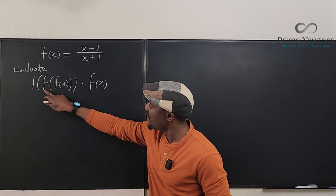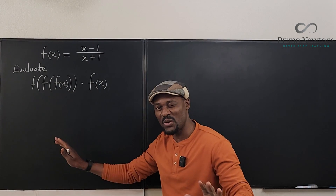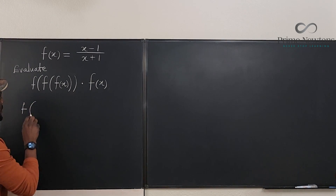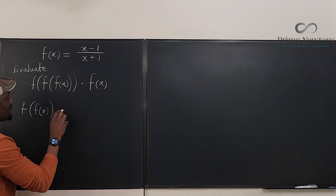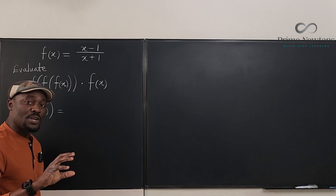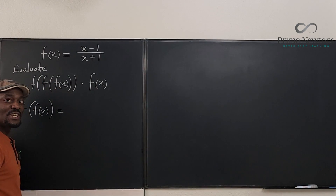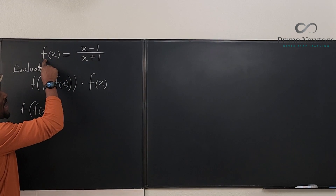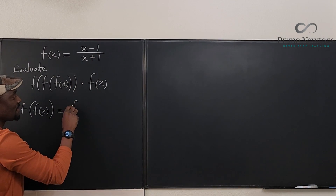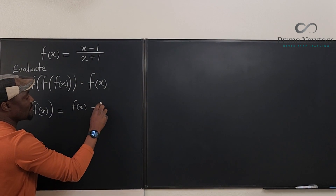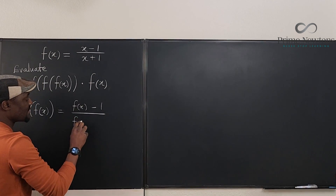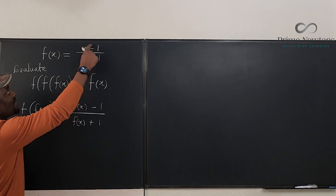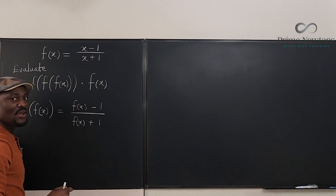The innermost function is f composed with f of x. f composed with f of x simply means that what you're going to be given now is f of f(x). Remember that whatever you give to f, it will apply the same rule. So this is going to be f of (x minus one over x plus one), meaning the argument becomes (x−1)/(x+1). But what exactly is f of x? f of x is x minus one over x plus one.